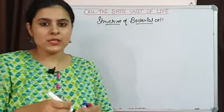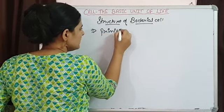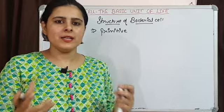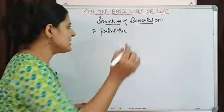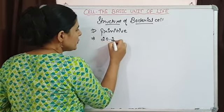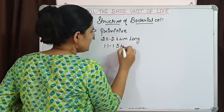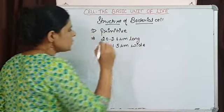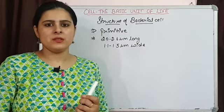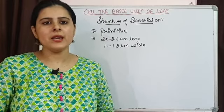Bacteria are unicellular organisms; they are the most primitive, very small in size, and a single cell is independently surviving. The size of a cell is approximately 2 to 2.6 micrometres long and 1.1 to 1.5 micrometres wide. Bacteria are of different shapes and we give different names to these bacteria depending upon the shape they have.